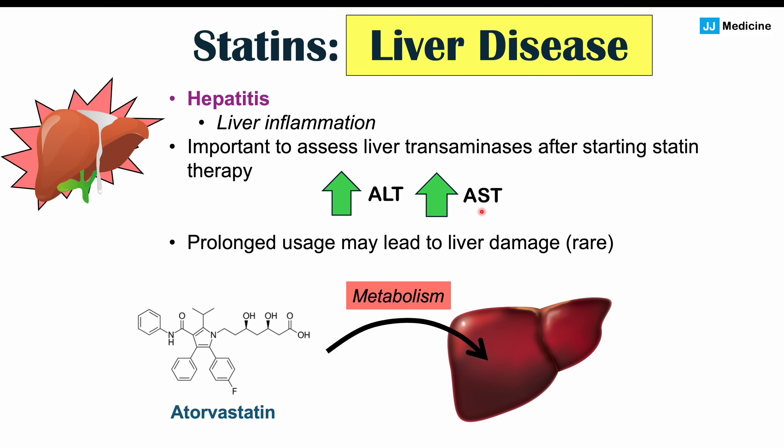Why does this happen? The reason is that statins are metabolized by the liver. In the process of being metabolized, liver cells will release some ALT and AST — which doesn't necessarily mean hepatitis or liver inflammation, but shows some leakage. However, if levels are three times above the upper limit of normal for ALT and AST, that indicates true hepatic inflammation.